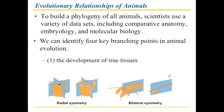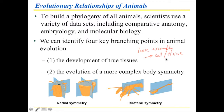The first branching point is the development of true tissues. The development of true tissues means you don't just have a loose assembly of cells, but you go from a loose assembly to an actual cell and tissue arrangement. In tissues, cells are not able to just go out and be by themselves. This is a major thing in the development of multicellularity — where you don't just have a loose assemblage, but you actually have real tissues. The second thing is the evolution of a more complex body symmetry.